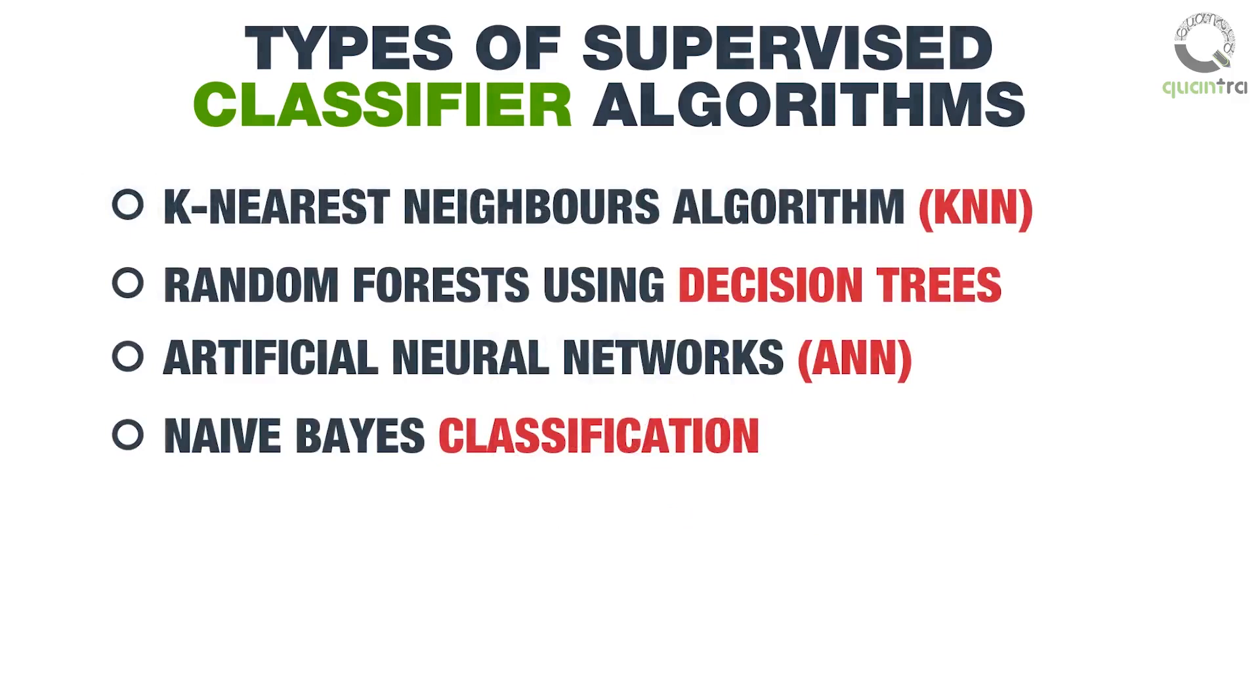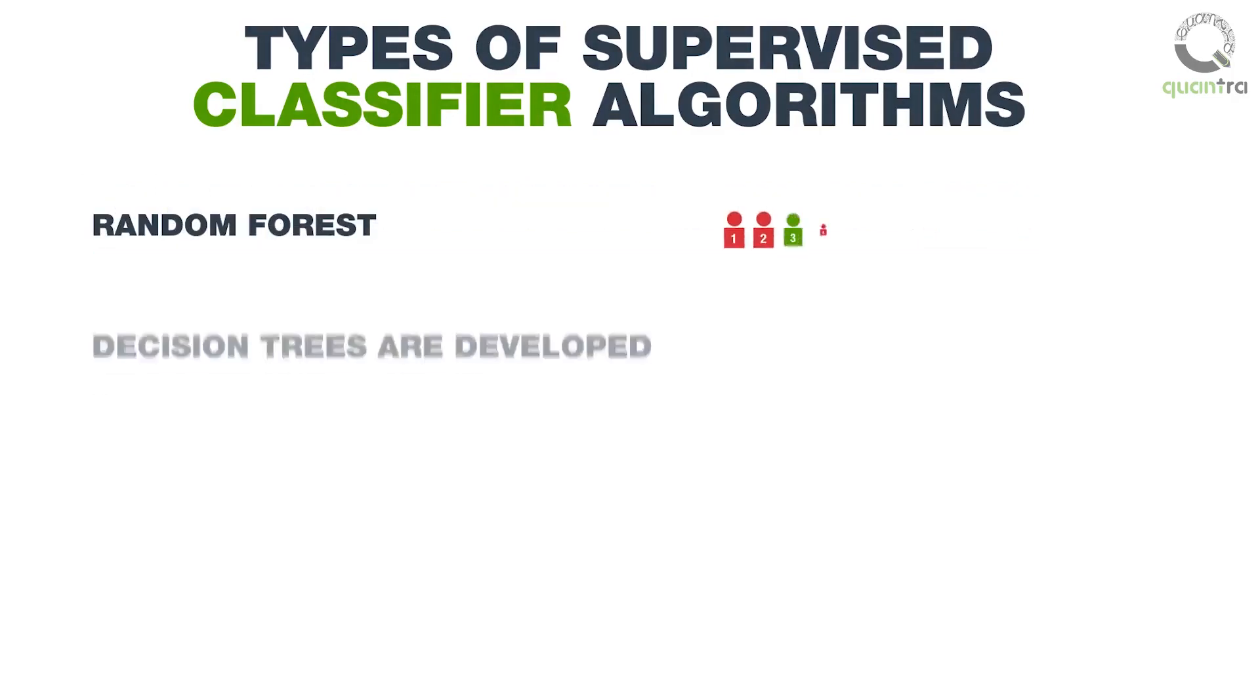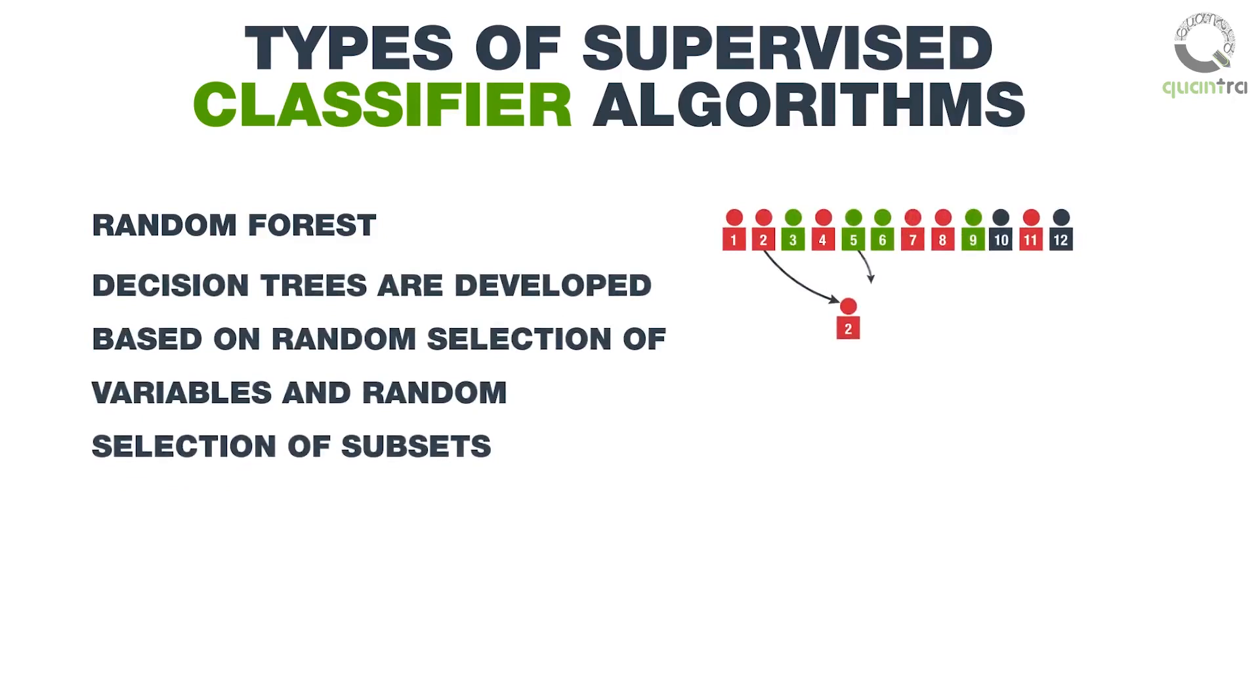The next classifier algorithm that we will discuss is Random Forest. In this method, Decision Trees are developed based on random selection of data items which are called variables, and random selection of subsets which are small groups of the variables taken from the data.